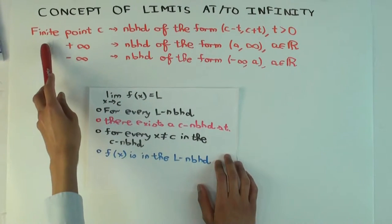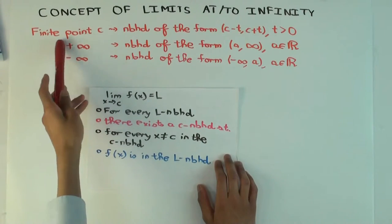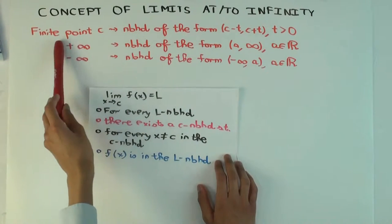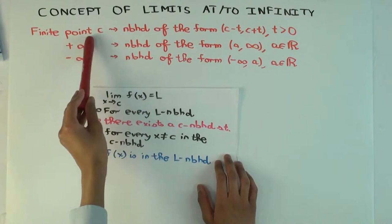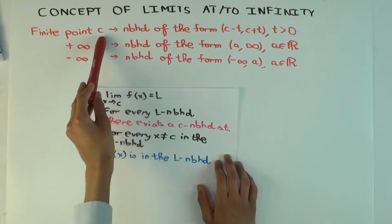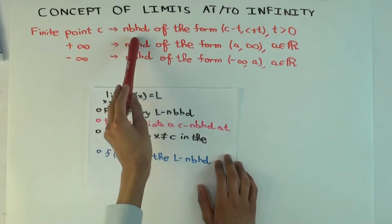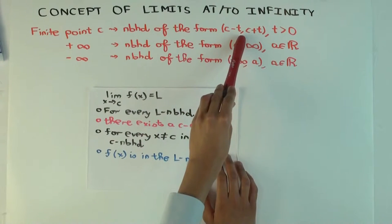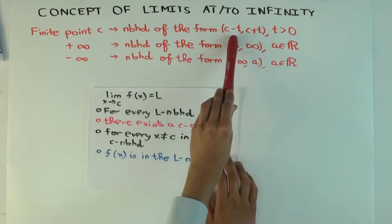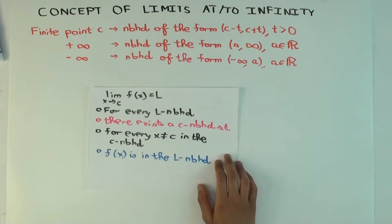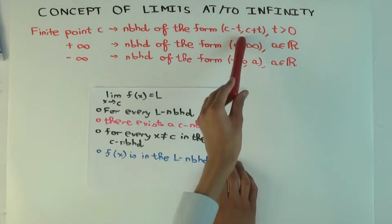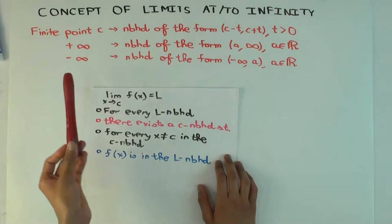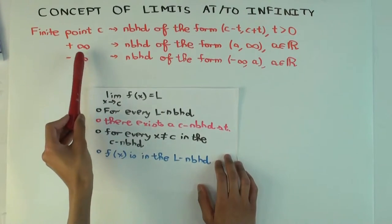For functions of one variable, these are the interpretations you need to be familiar with. For a finite point c — meaning an actual real number — the neighborhoods you are concerned about are open intervals centered at c, t to the left and t to the right. The letter t isn't important; we'll use letters like delta and epsilon, but it's just an interval centered at c. For plus infinity, the neighborhoods we use are open intervals from a finite point to infinity.